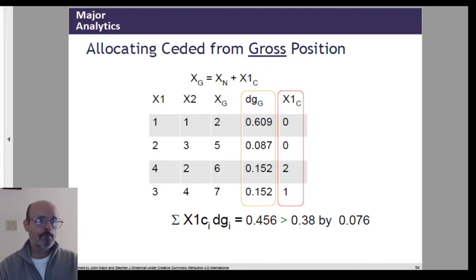Starting at the gross position. Again, we're ordering on the gross losses. We've got our dg that we already computed in that sort order. We have our seeded cash flow and cross multiply we get 0.456. So in the allocation of the gross required premium, 0.456 of that is allocated to the seeded. And so this is greater than the 0.38 reinsurance premium by 0.076. So what this is telling us is that we have determined that the cash flows that we are contemplating seeding out require a premium of 0.456, but we only have to pay 0.38. So it looks like a really good deal, 0.076.